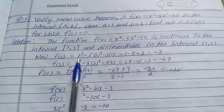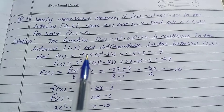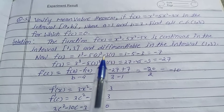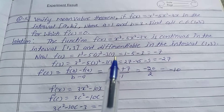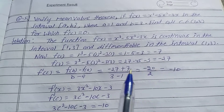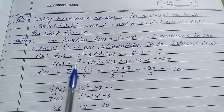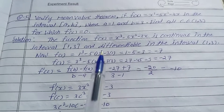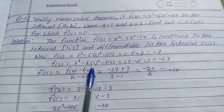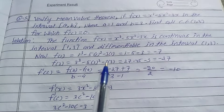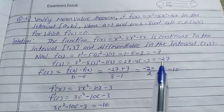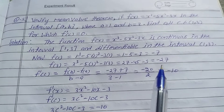f(1) is equal to: put the value 1 in the function, so 1³ - 5(1²) - 3(1) = 1 - 5 - 3 = -7. f(3) is equal to: put the value 3 in the function, so 3³ - 5(3²) - 3(3) = 27 - 45 - 9 = -27.